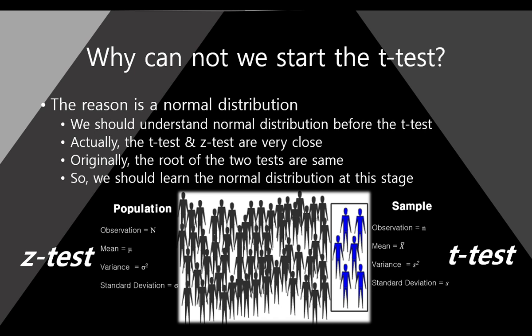We cannot start the T-Test right now. Why? The first reason is that we must know the normal distribution. We should understand normal distribution before T-Test. The T-Test and G-Test — here, G-Test means a kind of test based on the normal distribution. These two are very close, and originally the roots of these two tests are the same. So we should learn the normal distribution at this stage.